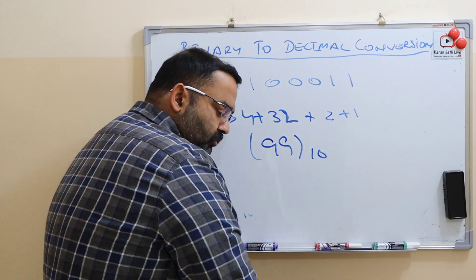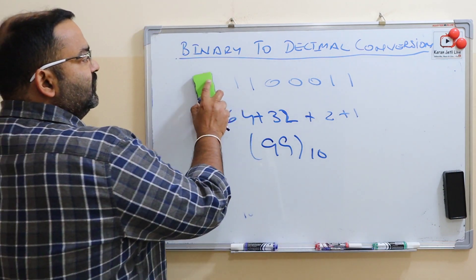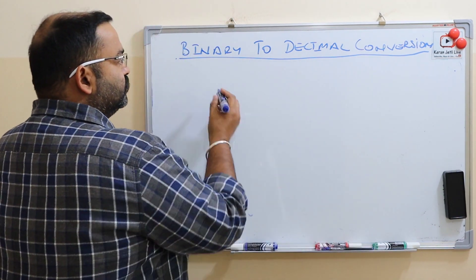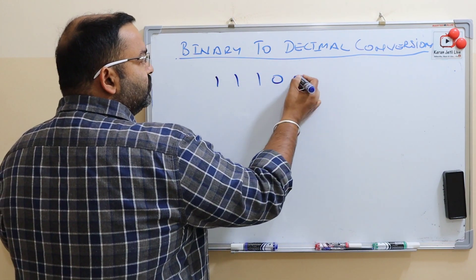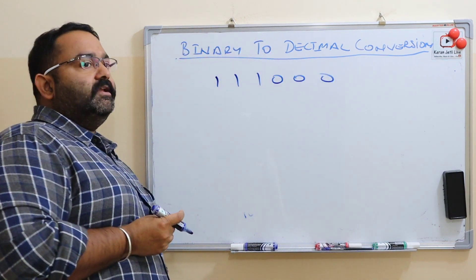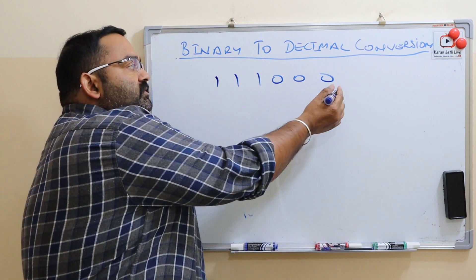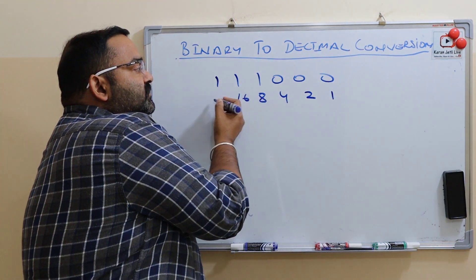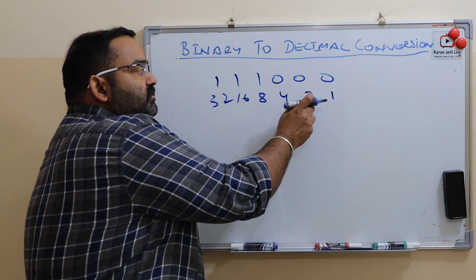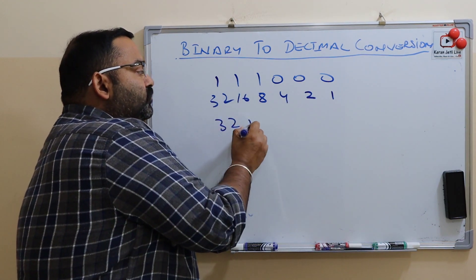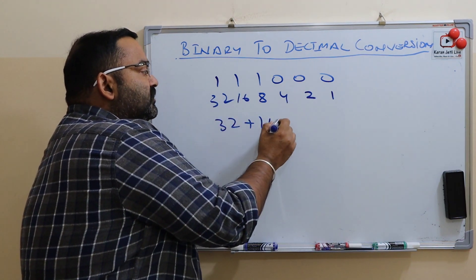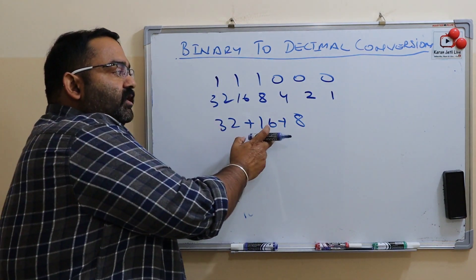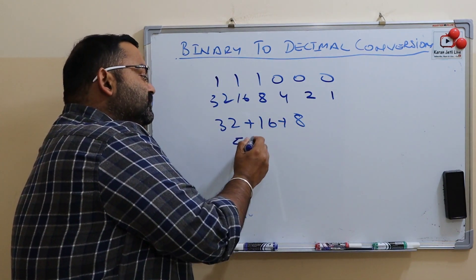Let us take one more — last example. Suppose this is our binary number. The positional values are: 1, 2, 4, 8, 16, 32. The binary digits are 0, 0, 0 for the lower positions, so we have 32 plus 16 plus 8. 32 plus 16 is 48, plus 8 is 56.